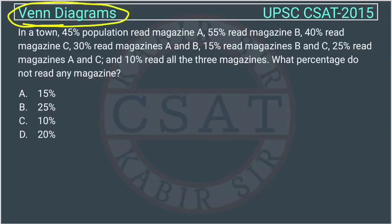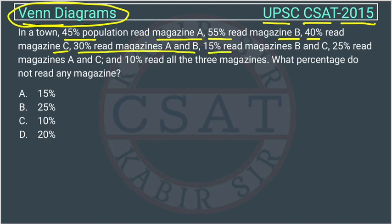This is a Venn Diagram question asked by UPSC in their CSAT paper of 2015. In a town, 45% of the population read magazine A, 55% read magazine B, and 40% read magazine C. 30% read magazine A and B, 15% read magazine B and C, 25% read magazine A and C, and 10% read all three magazines. What percentage of people do not read any magazine?